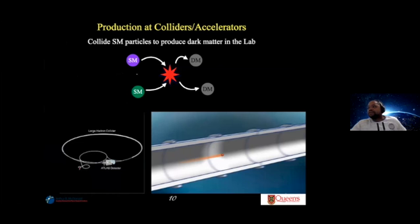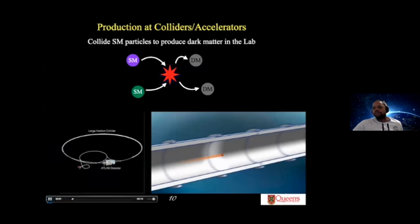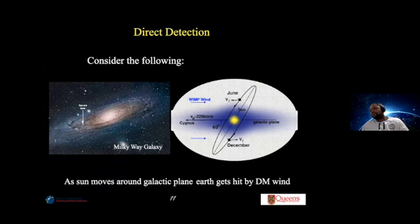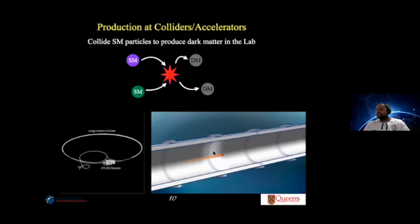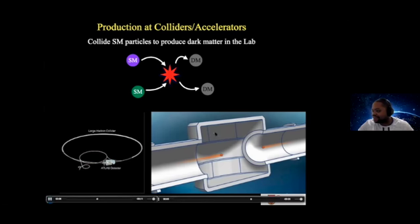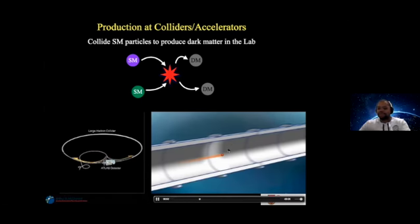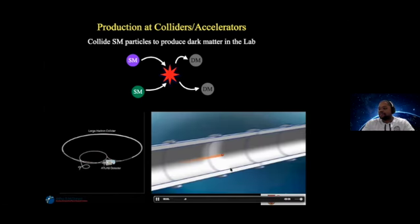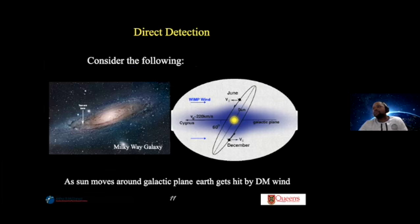Production in colliders gives us some control. In a particle collider, you accelerate bunches of protons, collide them with protons accelerated in the opposite direction, and they meet in a detector like ATLAS or CMS. They can produce dark matter particles that we search for using the silicon detector layers of these instruments.